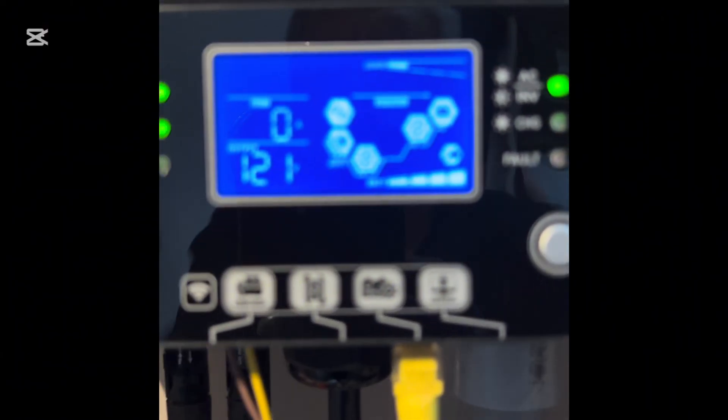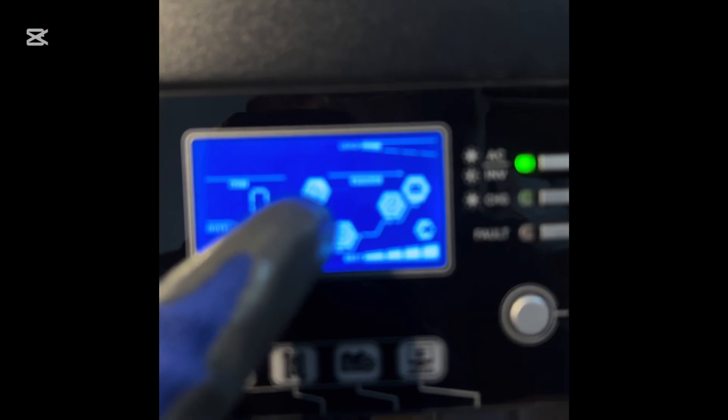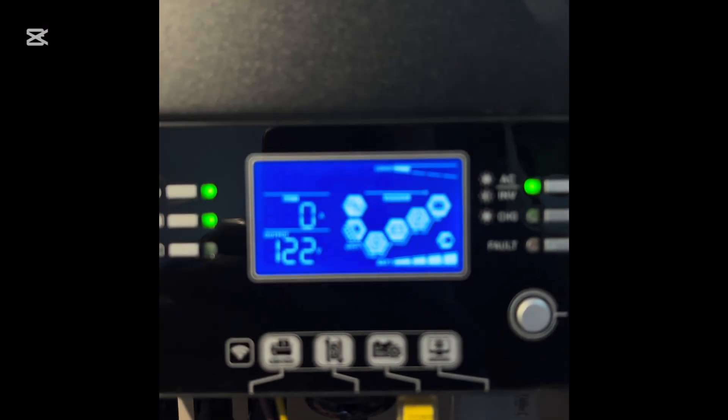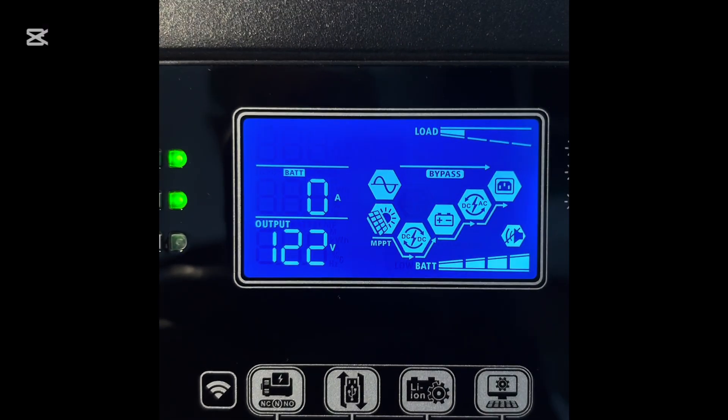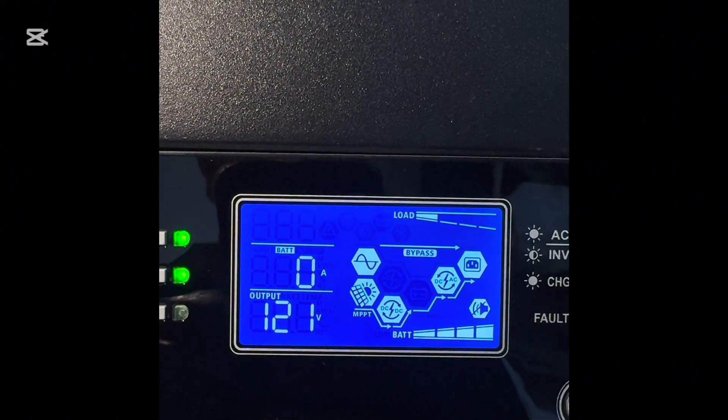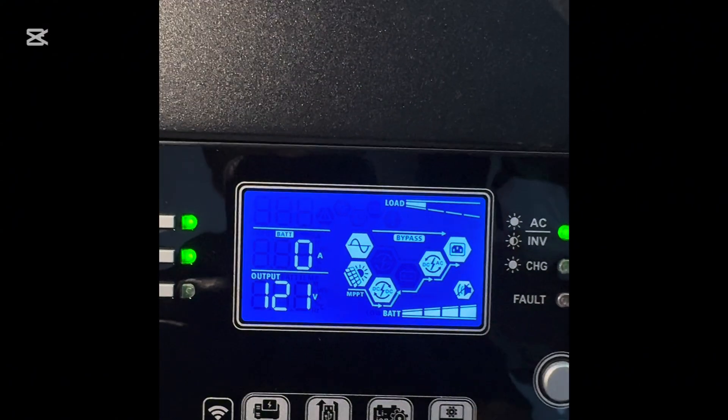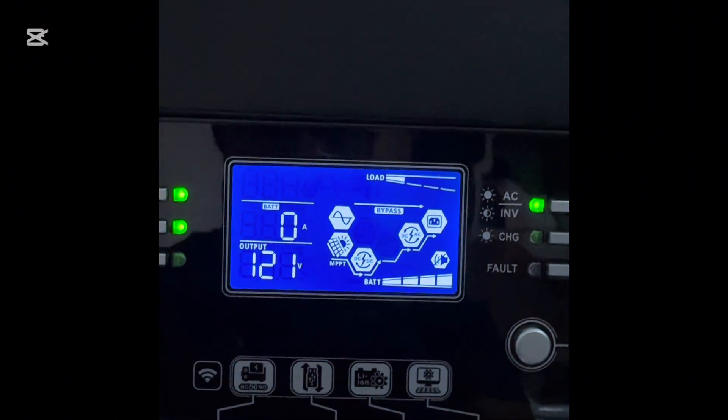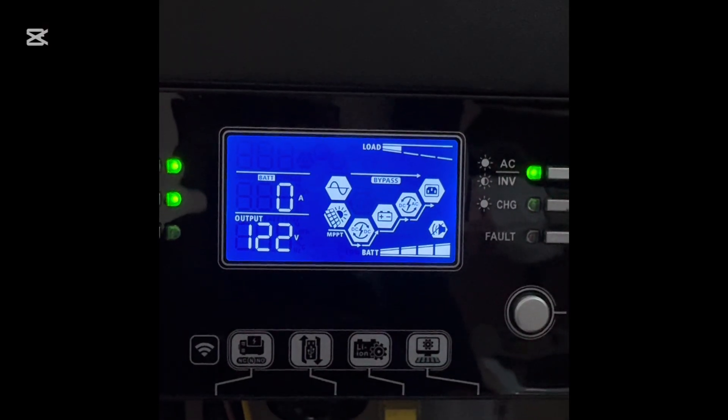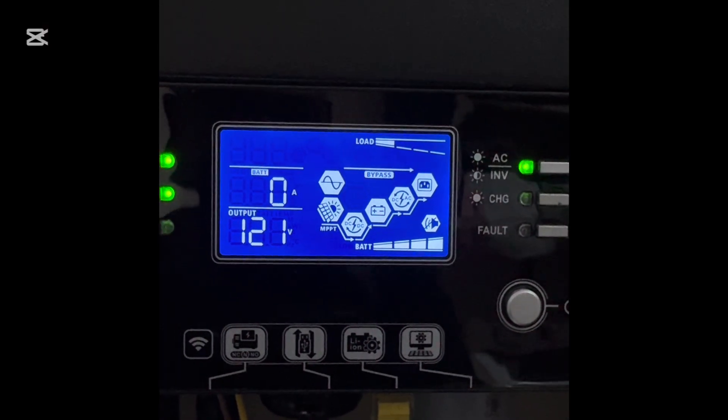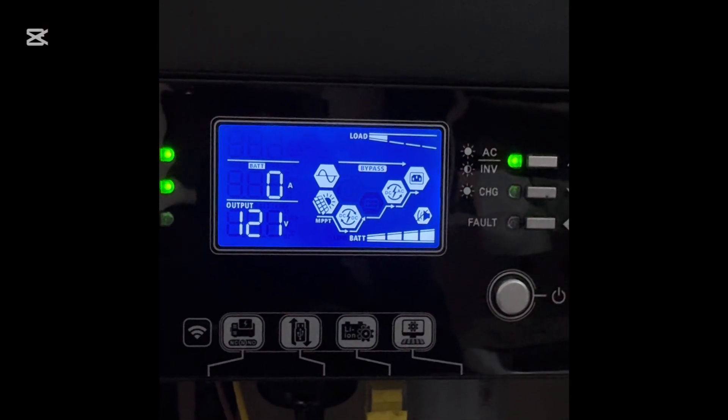The inverter is showing that I have utility coming, which is that sign right here. I have solar, I have utility, the battery is charging. My battery is 100% so I'm not really putting anything toward the charger. The battery is only supporting the load in the house.